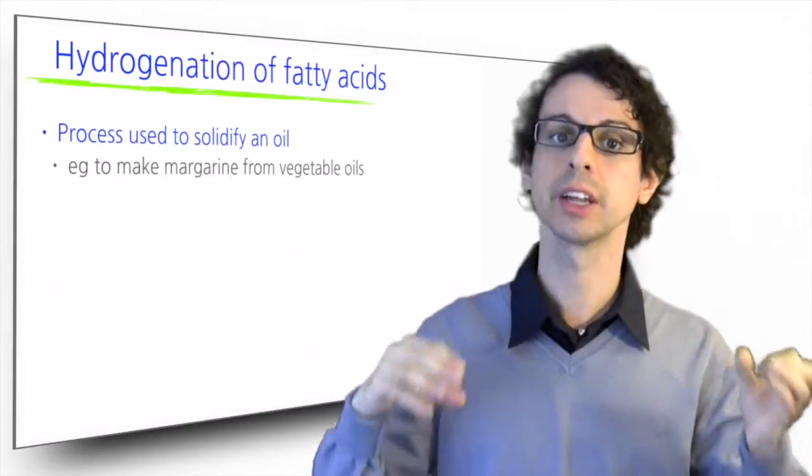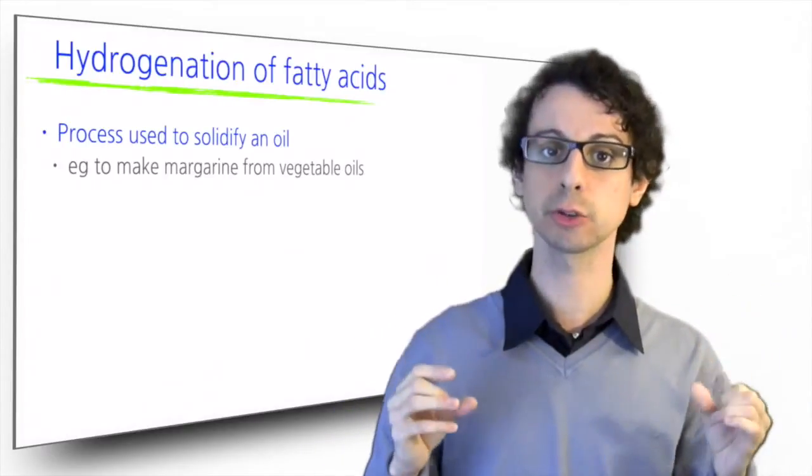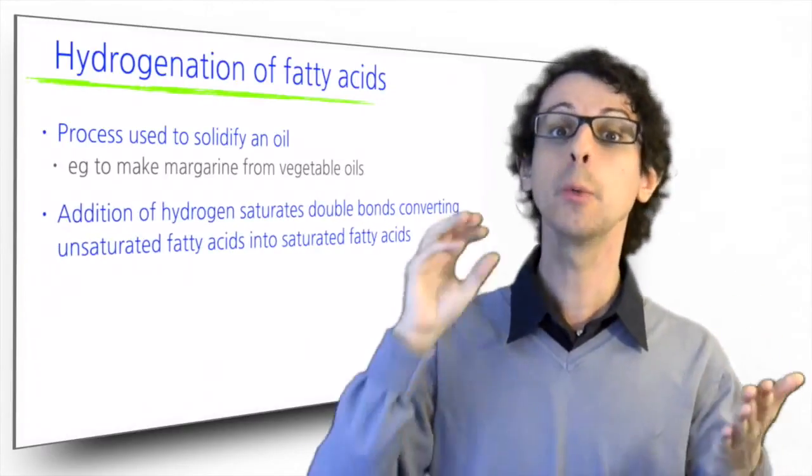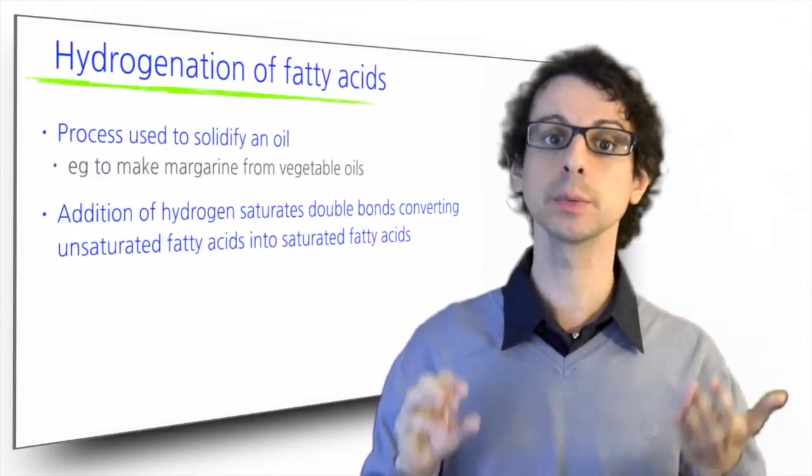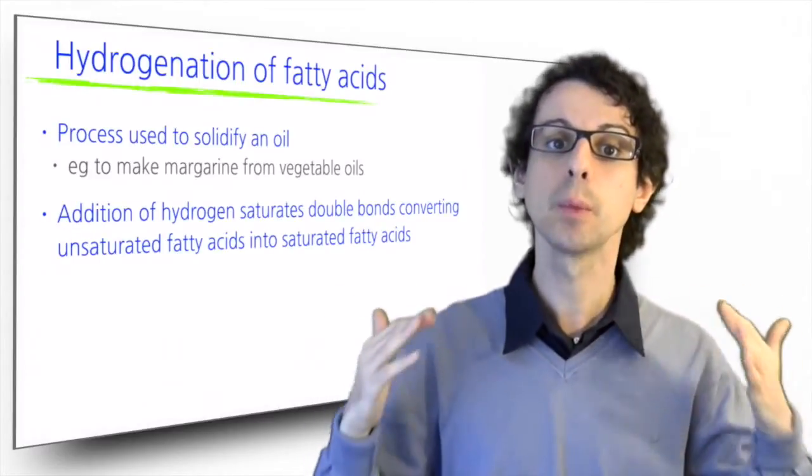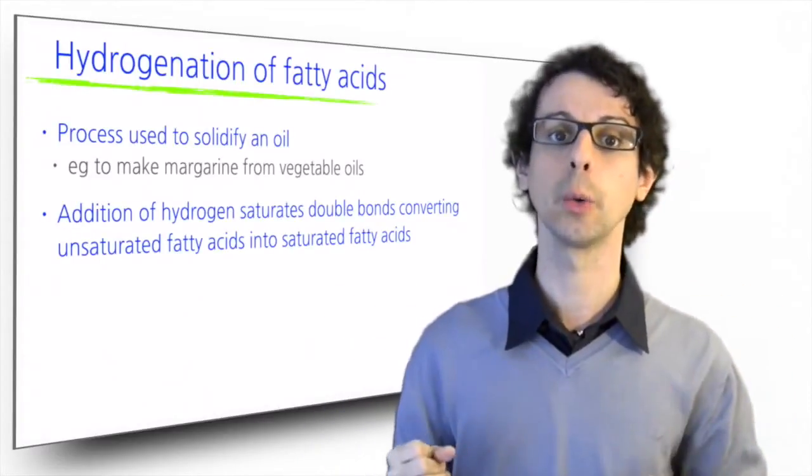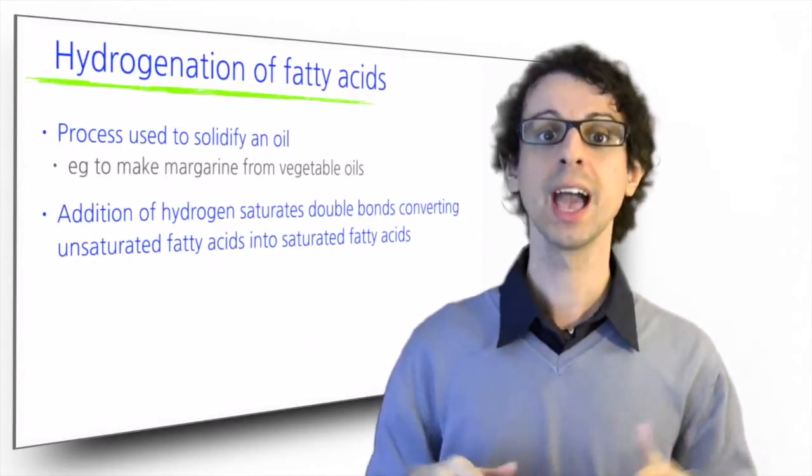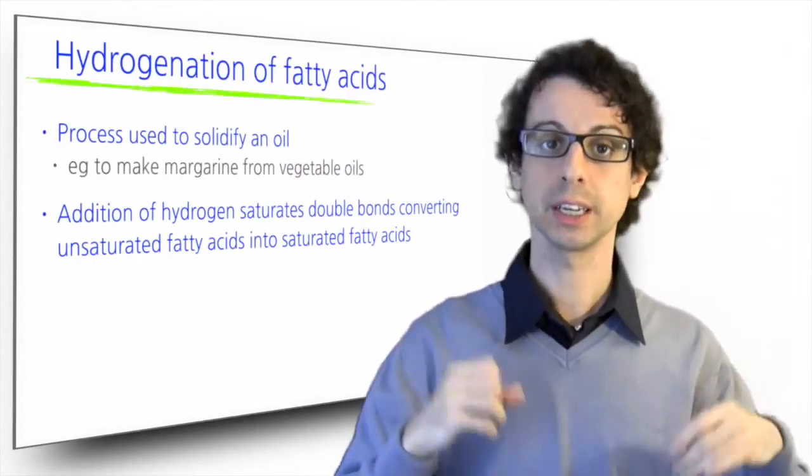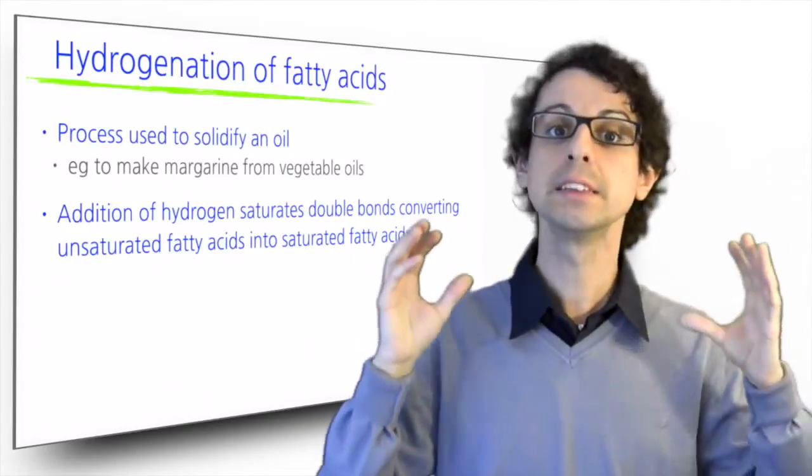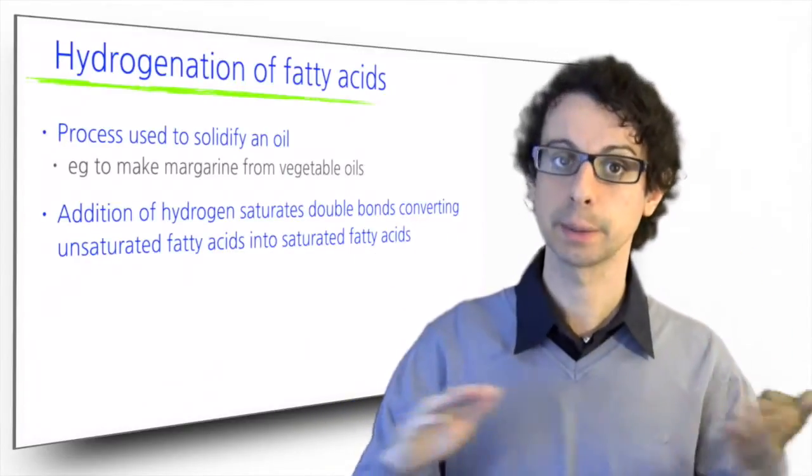If we bubble hydrogen at high pressure into our unsaturated liquid vegetable oil, we fill all its double bonds with hydrogen, and it will become more and more saturated. This process is called hydrogenation, and it's how we make margarine. It is vegetable oil, but made solid, so you can use it like butter.